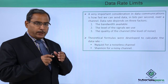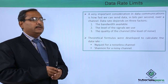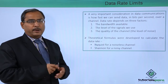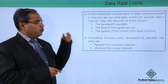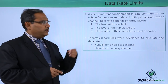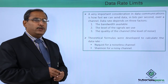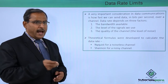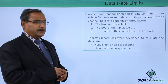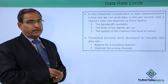We always require faster communication. That means the data transfer rate between the sender and the receiver should be fast enough and the time required should be minimum. Data transfer rate depends on three main factors: first, the bandwidth available — meaning the difference between the maximum and minimum frequency of the channel — the level of the signal we use, and the quality of the channel, that is the level of noise.